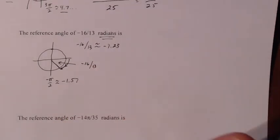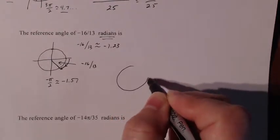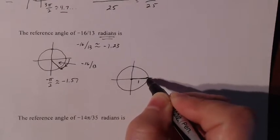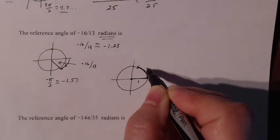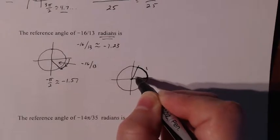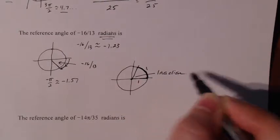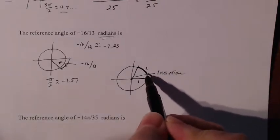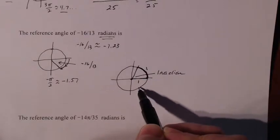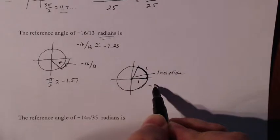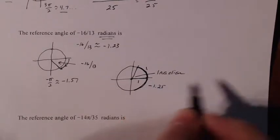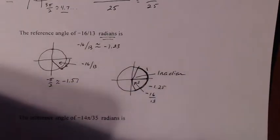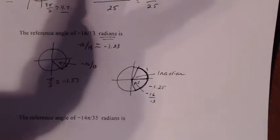Radian measure does not automatically imply that there is a π in it. You can measure one radian on the unit circle by taking the length of the radius — which is one — and placing it along the outside arc. That arc length of one corresponds to one radian. So you can have radian measure that doesn't include π. With negative 16 over 13, we're measuring approximately negative 1.23 units along the arc.